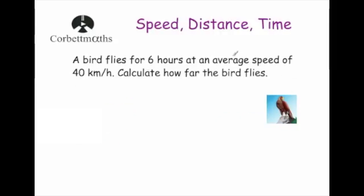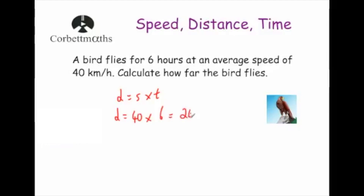A bird flies for 6 hours at an average speed of 40 kilometers per hour. Calculate how far the bird travels. We want the distance, so distance equals speed times time: 40 times 6 equals 240. The speed is in kilometers per hour, so the answer is 240 kilometers.